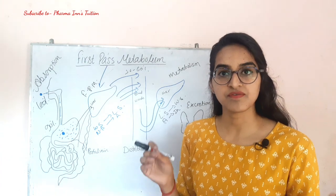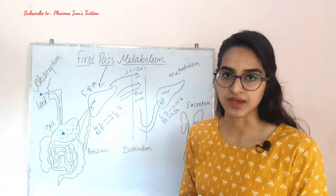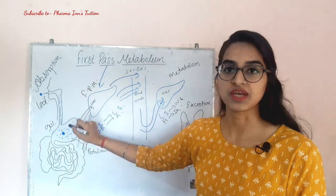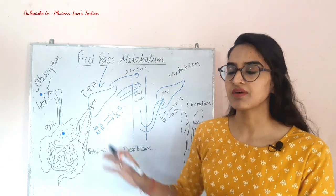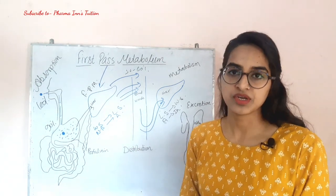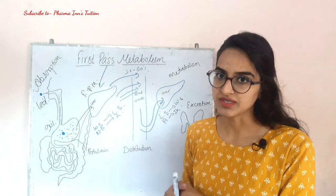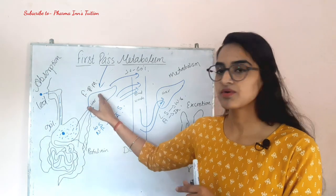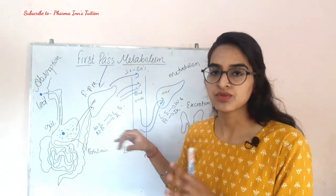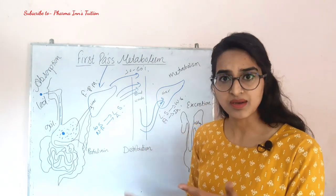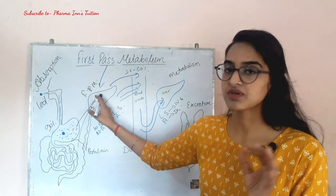There are several factors that can prevent or affect first-pass metabolism. The first factor is the route of administration — if we need good bioavailability or want to avoid first-pass metabolism losses, we can administer the drug from another route. The second factor is severe liver disease — if there is severe liver damage, the drug will skip first-pass metabolism and go directly into the blood vessels.